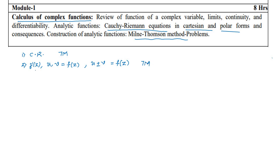Sometimes they will ask these three types in one question itself, and then you can have the option of scoring 20 out of 20 in this module. In this module you can have a minimum weightage of scoring 14 marks.